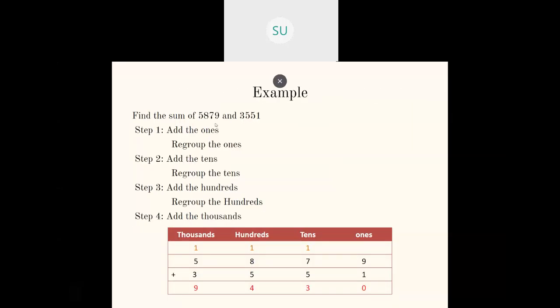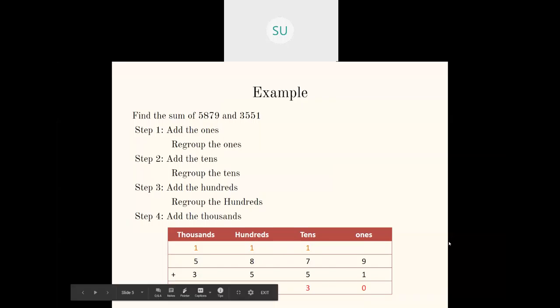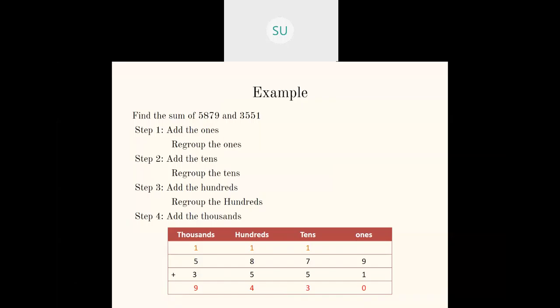Then we saw another example: 5879 plus 3551. We arrange the numbers vertically in columns and then add the ones. Nine plus one is ten, so we carry one ten to tens place. Then one plus seven is eight, eight plus five is thirteen — so we write three in the tens column and carry over one to hundreds place. In hundreds place we have one plus eight plus five which is fourteen. We write four in hundreds and carry one to thousands. Then one plus five is six, six plus three is nine. So the answer is 9430. This is how you add four-digit numbers with regrouping.